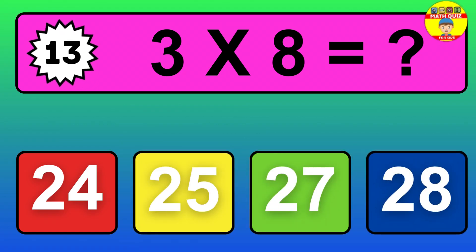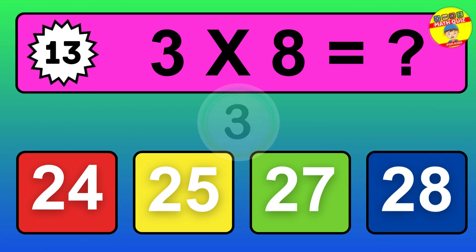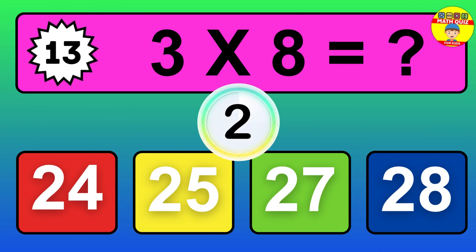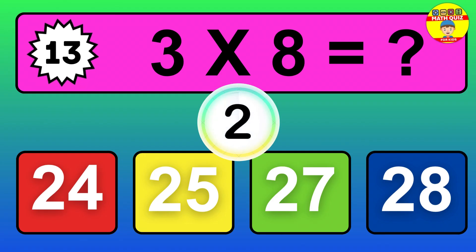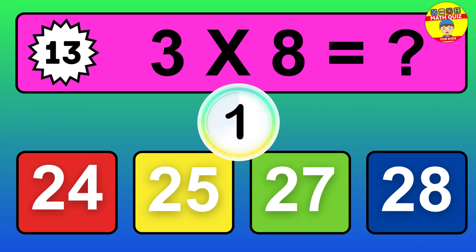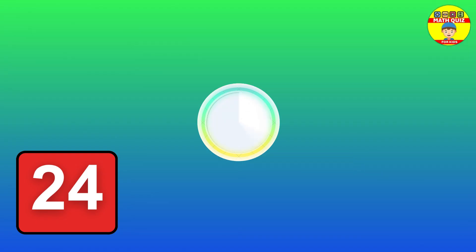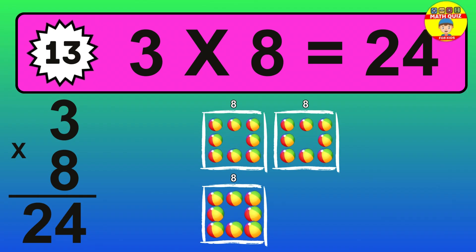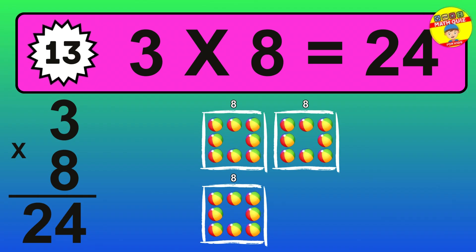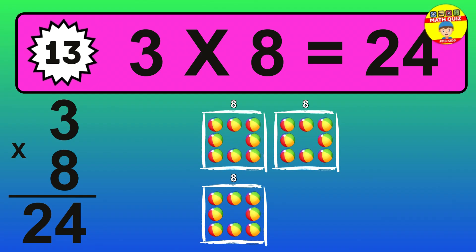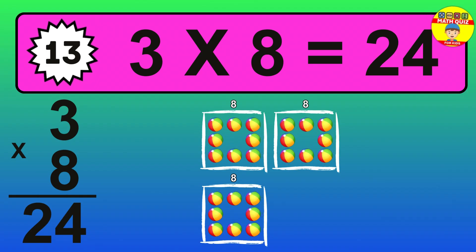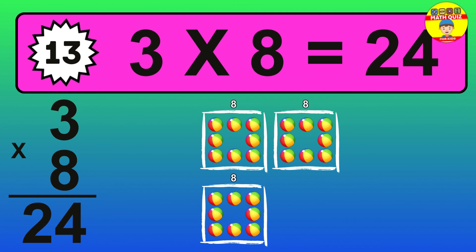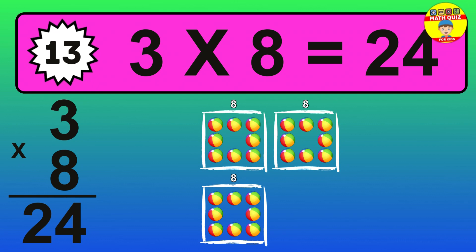The answer is 3 times 8 is 24. To calculate, we have 3 groups with 8 balls each one. So, how many balls do we have? 24 balls.